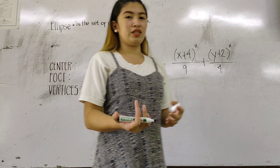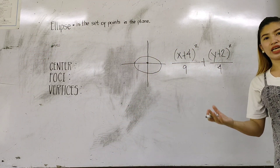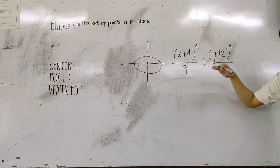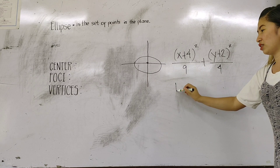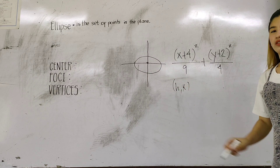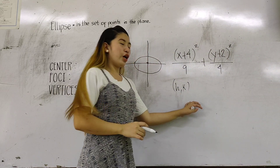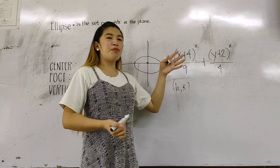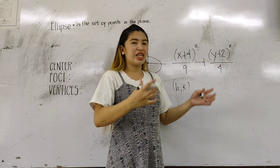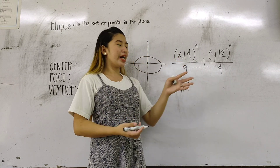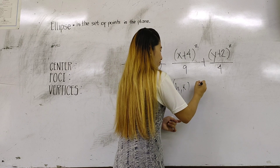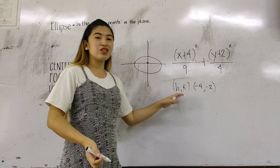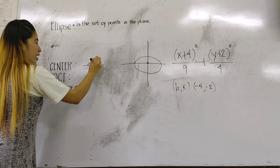How are we going to find the center? As discussed, H and K is also the center of the ellipse. From this given equation, what is the value of H and K? From our previous discussion — for a circle or parabola — whatever the sign is in the equation, when finding the center, we change the sign. So if it's +4, our H is negative 4, and our K is negative 2.